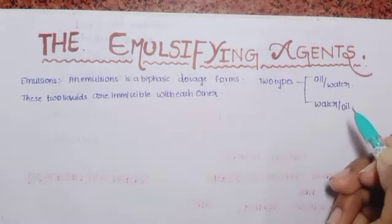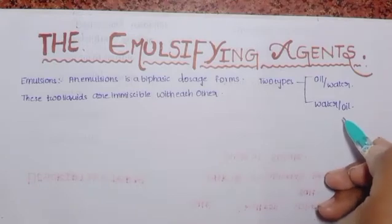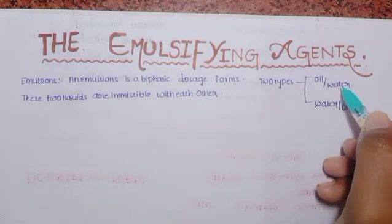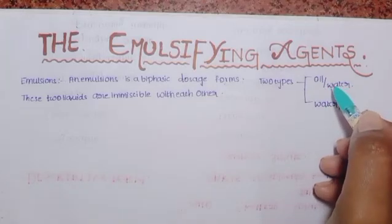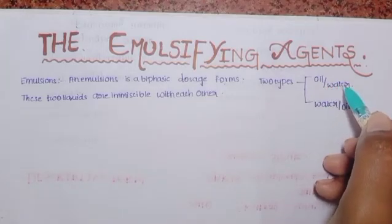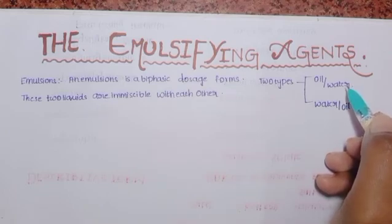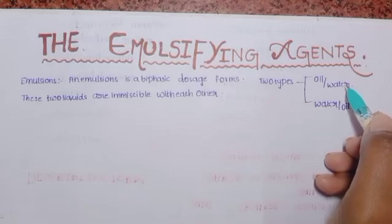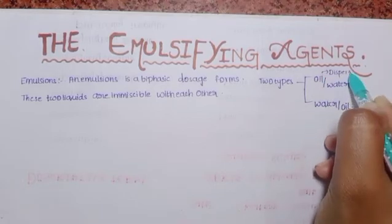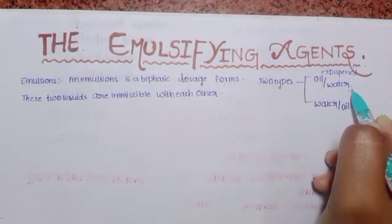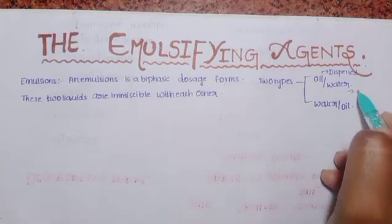In oil in water, water is the continuous phase and oil is the dispersed phase. The continuous phase means water has the higher capacity or activity, while the dispersed phase is the oil.